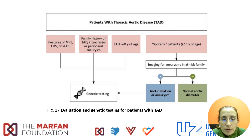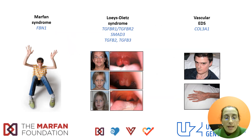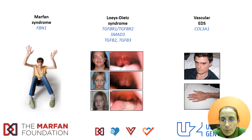At the 2022 ACC Aortic Guidelines, Figure 17, you can find indications on when genetic testing should be performed. Today we will focus on features of Marfan syndrome, Loeys-Dietz syndrome, and vascular Ehlers-Danlos syndrome. These syndromes are caused by different genes: Marfan syndrome is caused by FBN1, Loeys-Dietz syndrome is caused by different genes in the TGF-beta pathway, and vascular Ehlers-Danlos syndrome is caused by pathogenic variants in the COL3A1 gene.